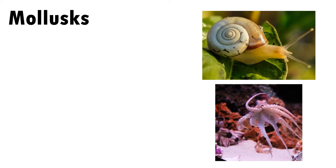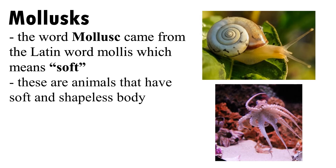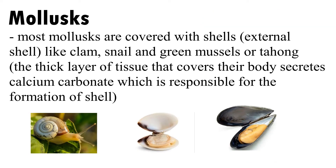The word mollusks came from the Latin word 'molis,' which means soft. These are animals that have soft and shapeless bodies. Most mollusks are covered with shells, like clams, snails, and green mussels. The thick layer of tissue that covers their body secretes calcium carbonate, which is responsible for the formation of the shell.